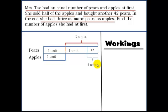So we know that one unit is equal to 42. And initially, apples, how many apples were there? There were one unit and two units were there. So apples is equal to two units, which is equal to two times 42, which is equal to 84.